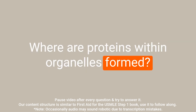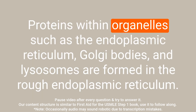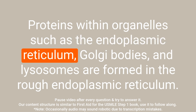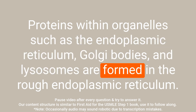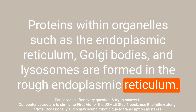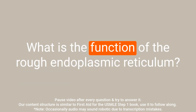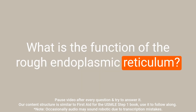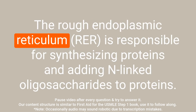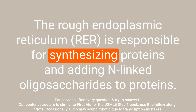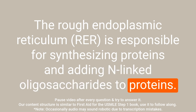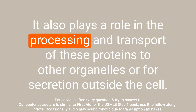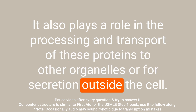Question: Where are proteins within organelles formed? Answer: Proteins within organelles such as the endoplasmic reticulum, Golgi bodies, and lysosomes are formed in the rough endoplasmic reticulum. Question: What is the function of the rough endoplasmic reticulum? Answer: The rough endoplasmic reticulum is responsible for synthesizing proteins and adding N-linked oligosaccharides to proteins. It also plays a role in the processing and transport of these proteins to other organelles or for secretion outside the cell.